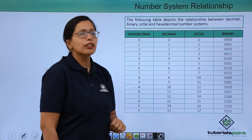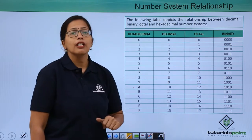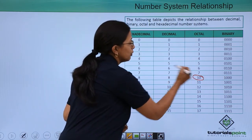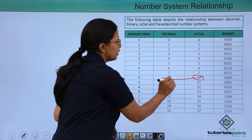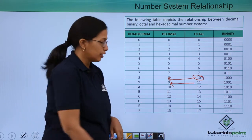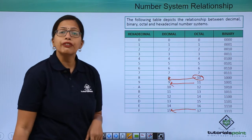When it comes to octal, you know that there are just 8 digits, 0 to 7. So what will happen after 7? It will convert to 10. 10 is here equivalent to 8, 11 here is equivalent to 9, similarly 17 here is equivalent to 15.